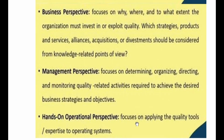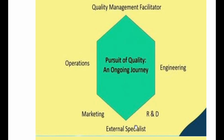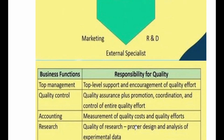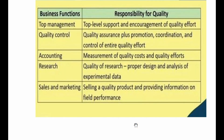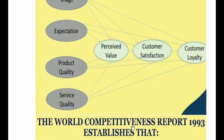The hands-on operational perspective focuses on applying quality tools and expertise to operating systems. Quality management facilitators include operations, marketing, external specialists, research and development, and engineering — the pursuit of quality is an ongoing journey. Business functions and responsibility for quality span: top management providing support and encouragement, quality control and quality assurance for coordination and control of the entire quality effort, and departments including accounting, research, sales and marketing, design engineering, tool engineering, product engineering, purchasing, and manufacturing. The linkages in pursuing quality are perceived value, customer satisfaction, and customer loyalty.